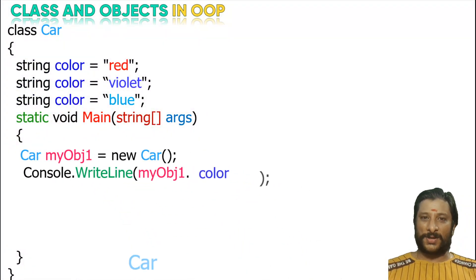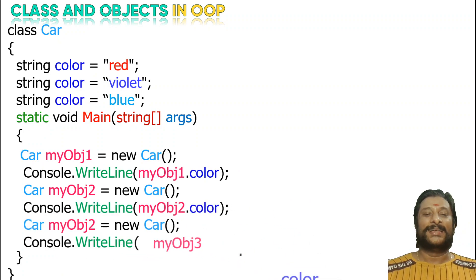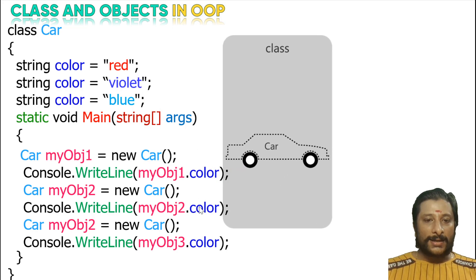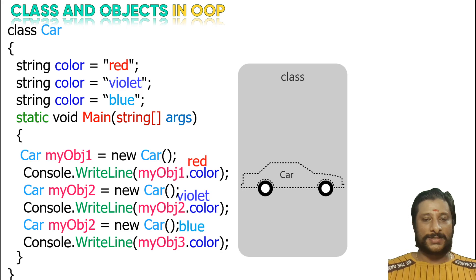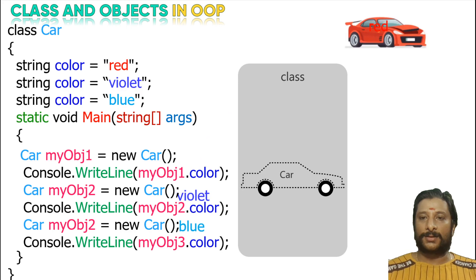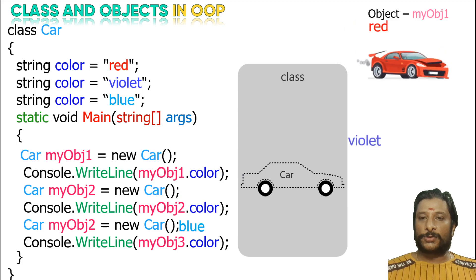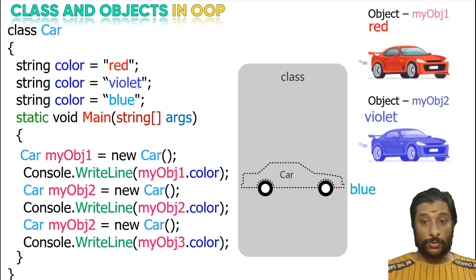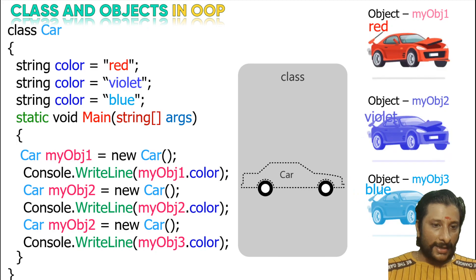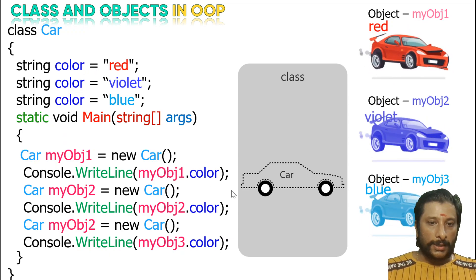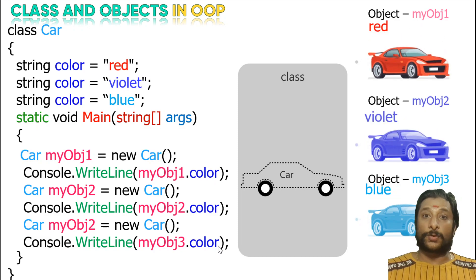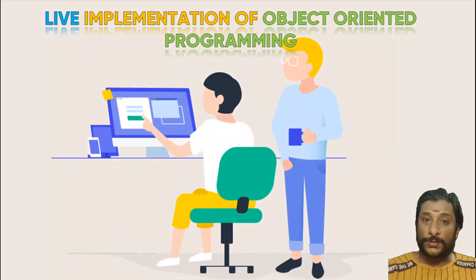If you want three color cars, yes it is possible. You can see: your red color car, your violet color car, and your blue color car. Here is object3. So I have three objects — a red color object, a violet color object, and a blue color object. You should have color1, color2, color3 accordingly. I made a small mistake, but the code is really simple — you can easily understand. This is how you write object-oriented programming.